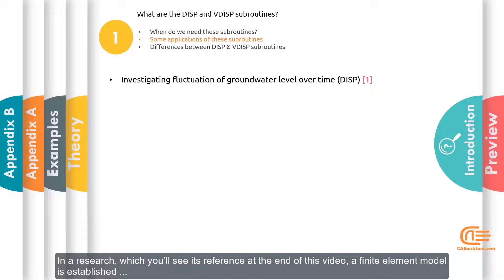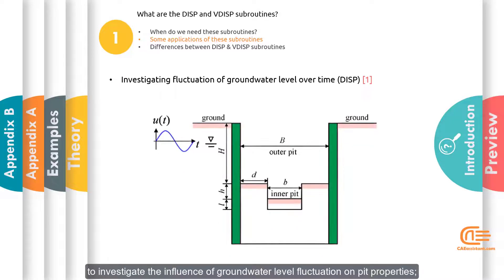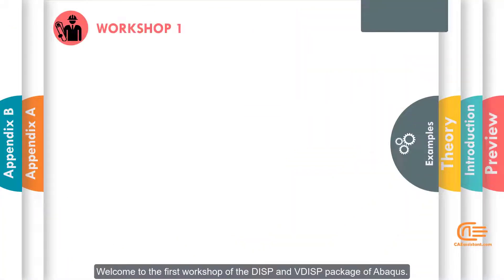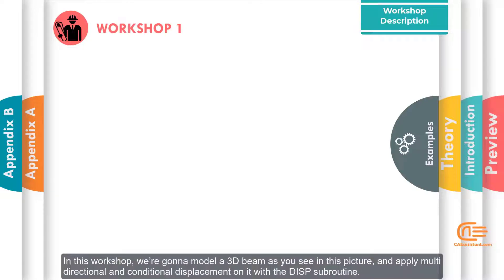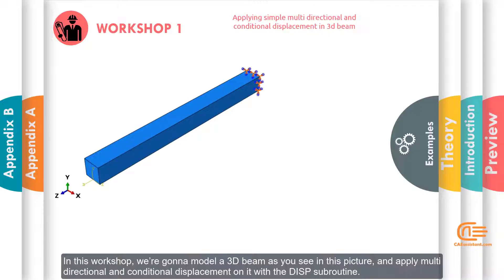In a research study — whose reference you'll see at the end of this video — a finite element model is established to investigate the influence of groundwater level fluctuation on pit properties. Welcome to the first workshop of the DISP and VDISP package of Abacus. In this workshop, we're going to model a 3D beam as you see in the picture and apply multi-directional and conditional displacement on it with the DISP subroutine.